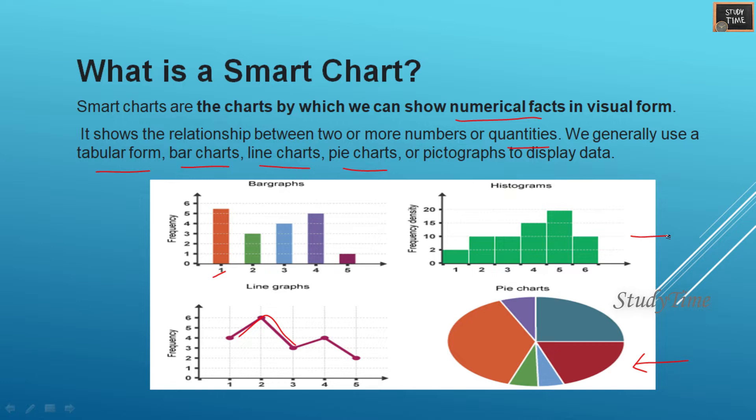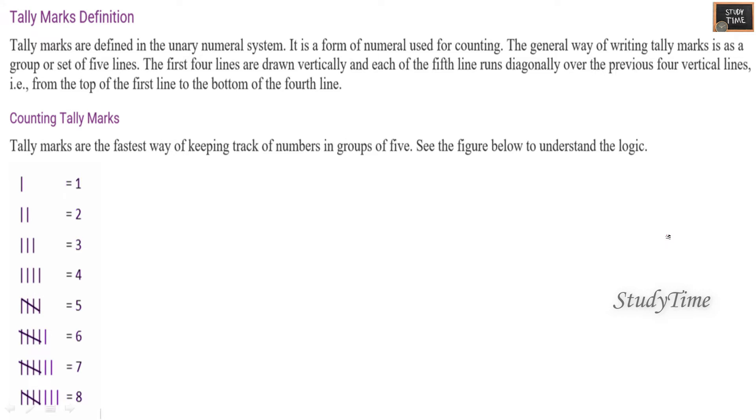Next we'll see tally marks. Tally marks are defined in the unary numerical system. It is a form of numeral used for counting. So first we'll see how it is represented. Below are the numbers given: for 1 it is one line, for 2 it is two lines, 3, 4. For 5: 1, 2, 3, 4, and you have to make a cross. This is 5.